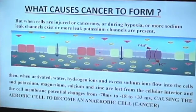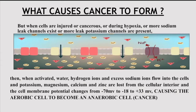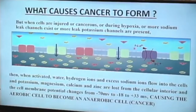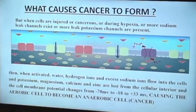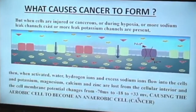What causes cancer to form? This is absolutely extraordinary. What we found was that if you took normal cells and did two things — you deprived that cell of oxygen creating a hypoxia state, and you increased the level of sodium ions — a normal cell changes its metabolism from aerobic to anaerobic. All anaerobic cells in the human body are cancerous. We noticed that sodium ions would flow freely in, with a much higher concentration of sodium ions within a cancer cell than in a normal cell. This reduced the voltage from minus 70 millivolts down to somewhere between minus 18 to plus 33 millivolts, causing the aerobic cell to become an anaerobic cell.